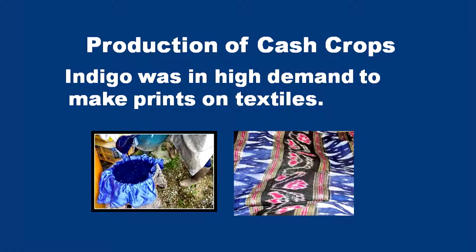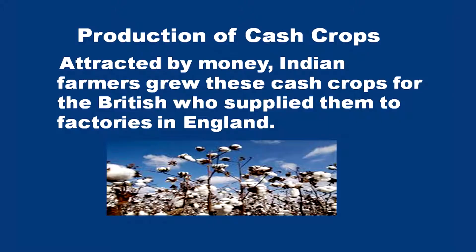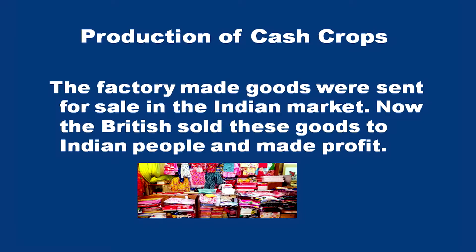Indigo was in high demand to make prints on textiles. Indigo, cotton, etc. were promoted. The farmers were forced to grow these cash crops for the benefit of the British. Attracted by the money, the Indian farmers grew all these cash crops for the British, who supplied them to factories in England. The factory-made goods were sent for sale in the Indian market, and the British sold these goods to Indian people and made profit.